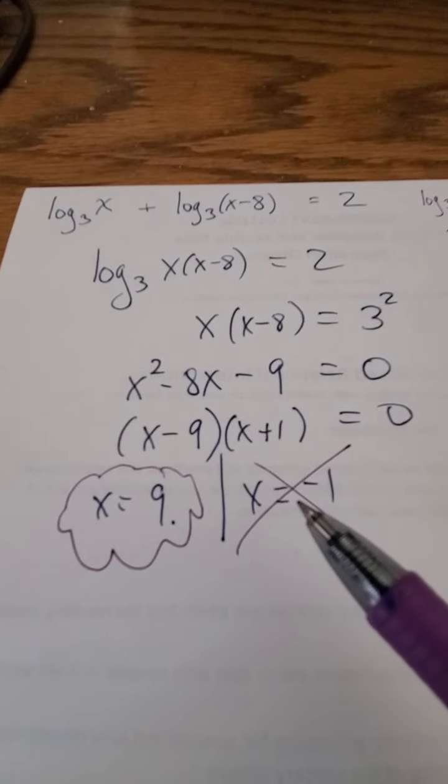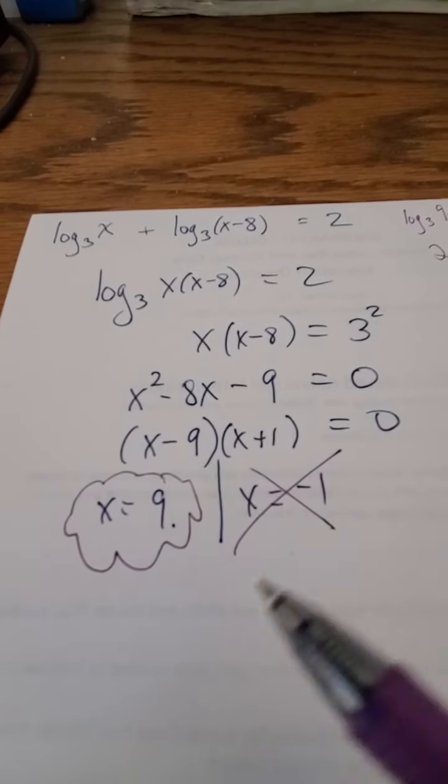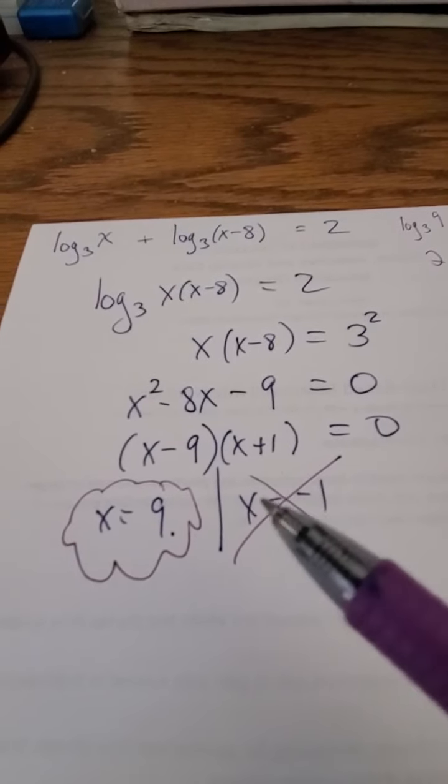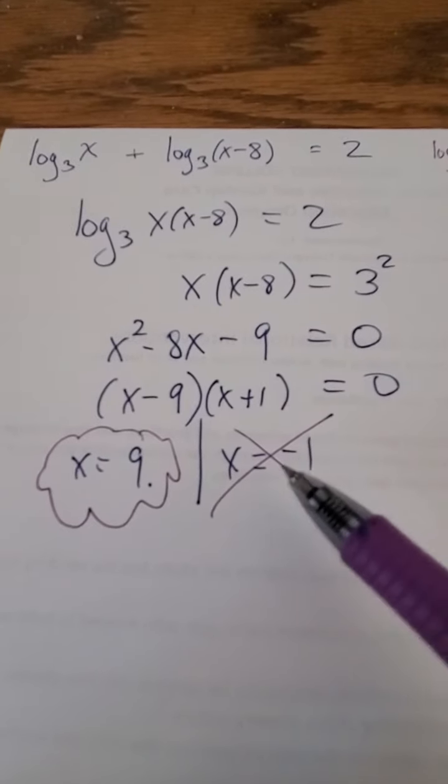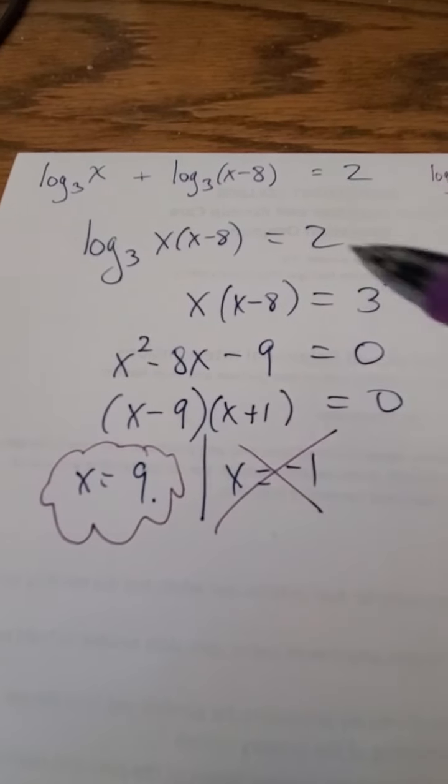And again, it's not that negative 1 was a mistake. We did all the algebra correctly. It's just that sometimes when you have problems, especially as the math gets more advanced, you're going to generate solutions which won't work back in the original problem. They won't satisfy the conditions of the original problem. And that's it, I'm out!